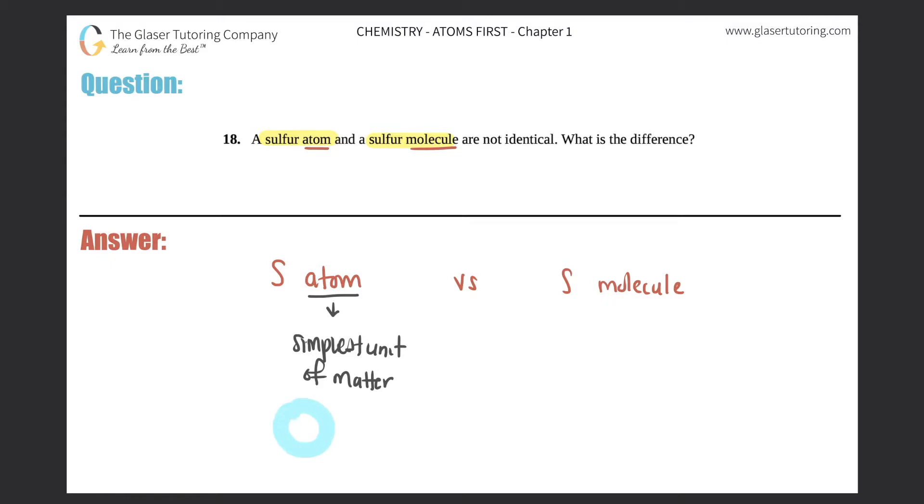Can't get any simpler than an actual atom. So for example, an atom would only be one unit of matter for any block or any square that's on the periodic table. Now they're specifically saying that it's sulfur, so a sulfur atom is just one single sulfur, it's not two or three. An atom can only be one unit of matter.